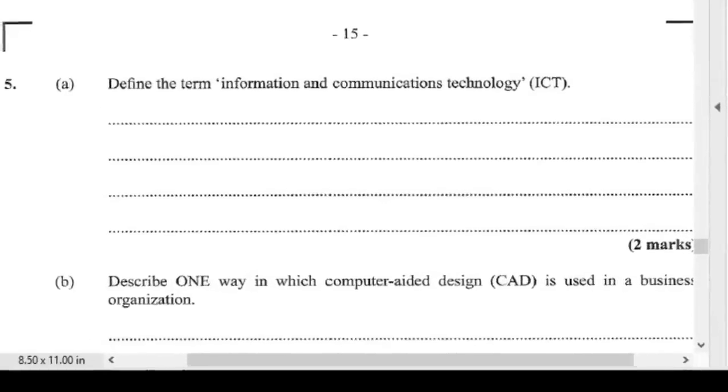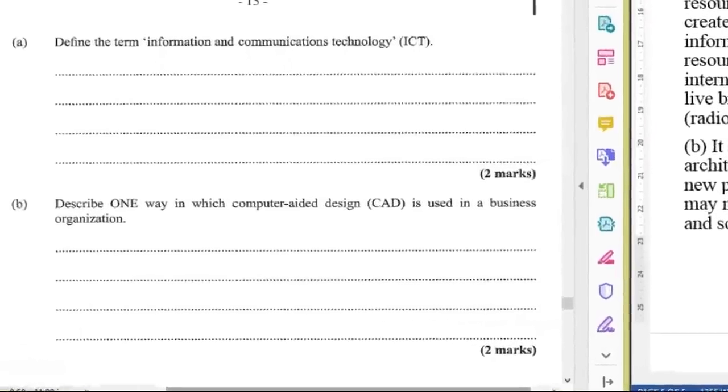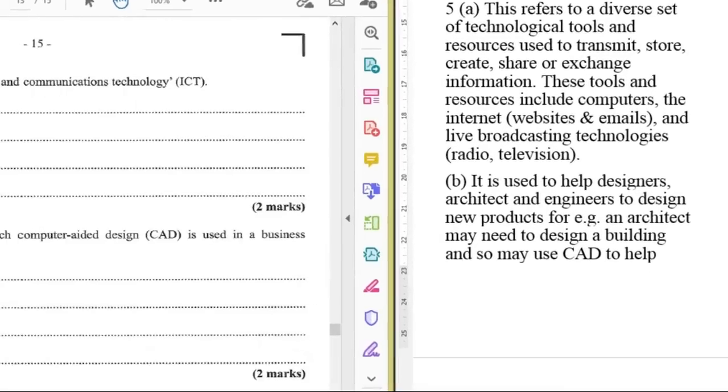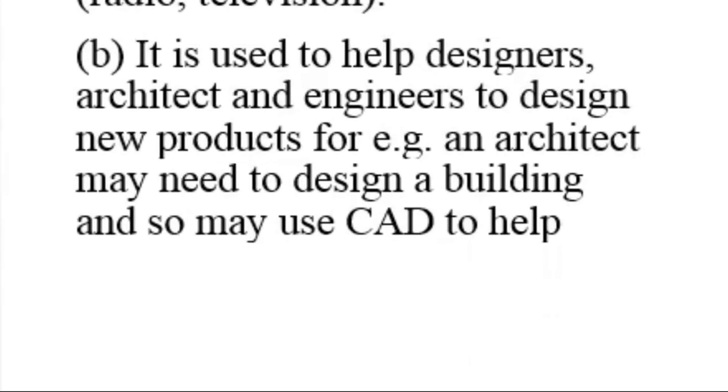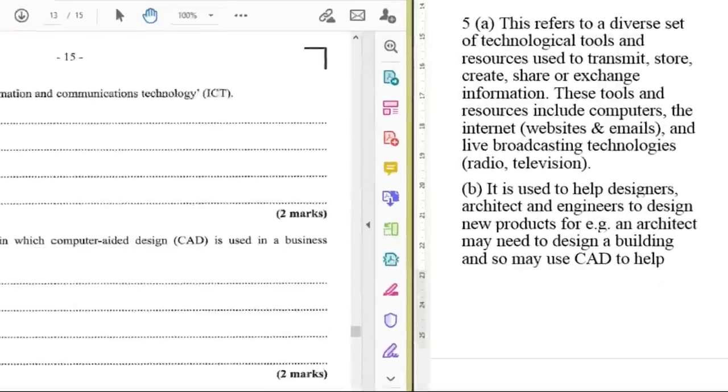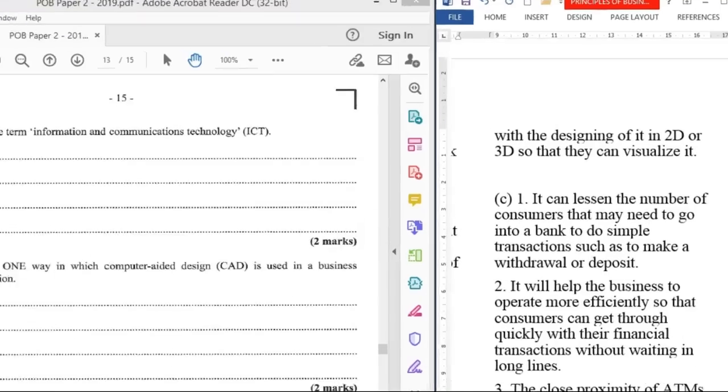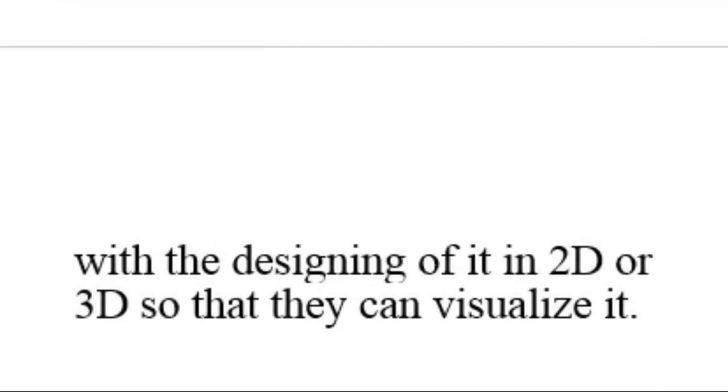B says describe one way in which computer-aided design is used in a business organization. It is used to help designers, architects, and engineers to design new products. For example, an architect may need to design a building and so may use CAD to help with the designing of it in 2D or 3D so that they can visualize it.